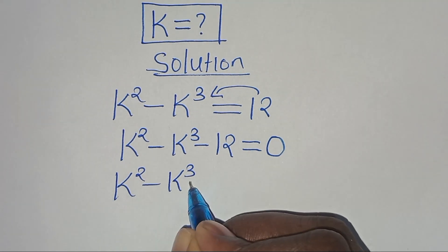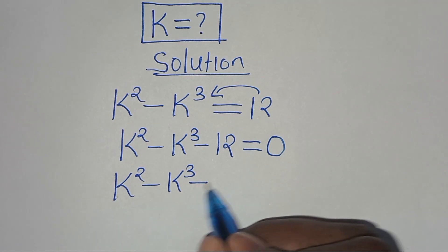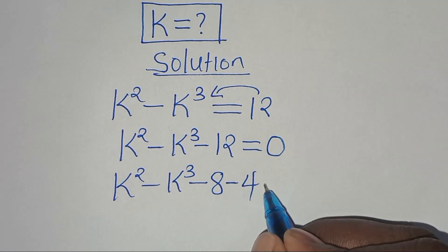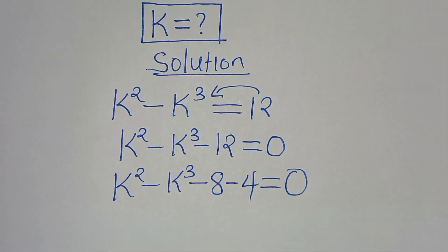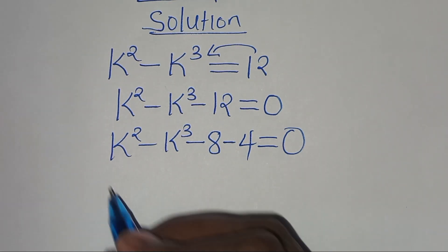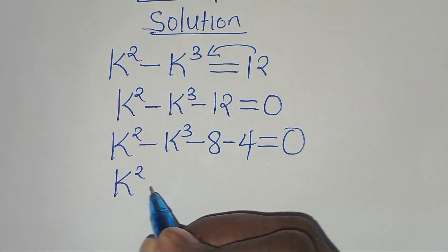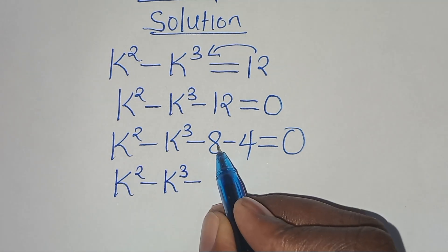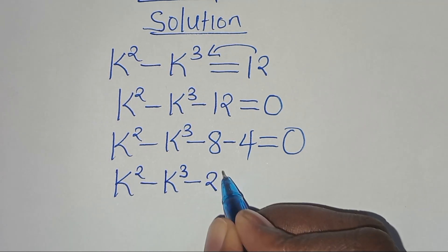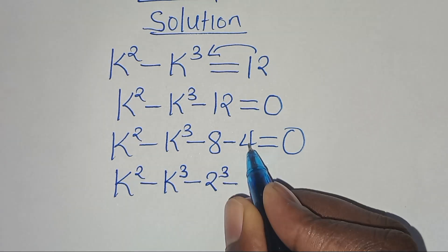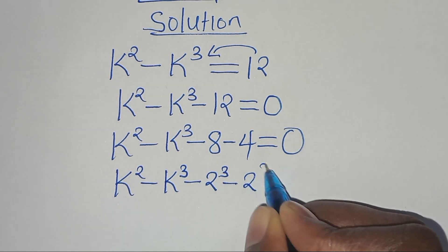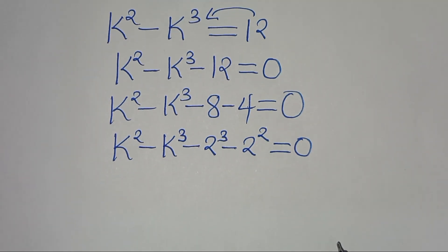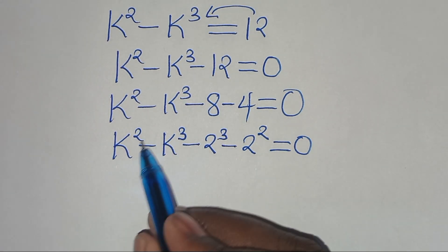We can express minus 12 as minus 8 minus 4, so we have k squared minus k to the power of 3, subtract 8 — which can be expressed as 2 to the power of 3 — minus 4, which can be expressed as 2 to the power of 2, all equal to 0.